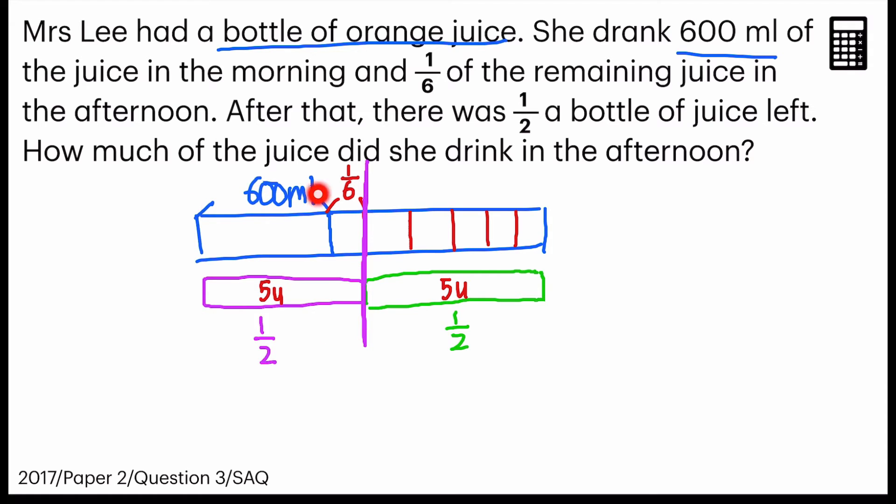But let's take a look on this side. Now there are five units here and there is this one unit here, which means I can infer that four units equals 600 ml, because this is one unit and this is four units.